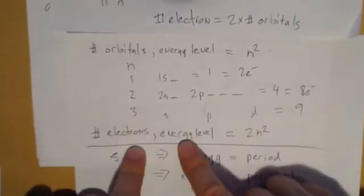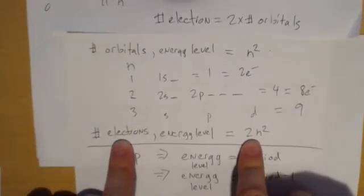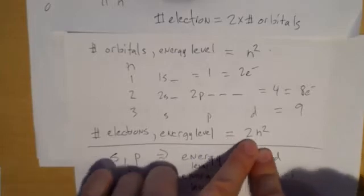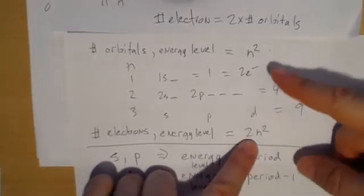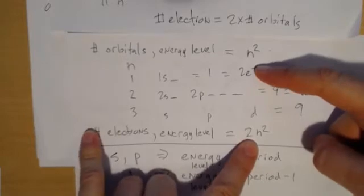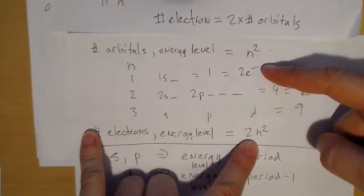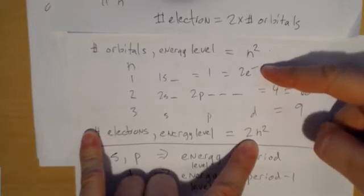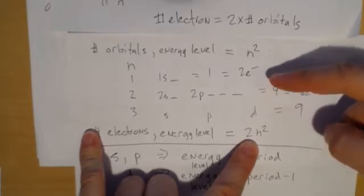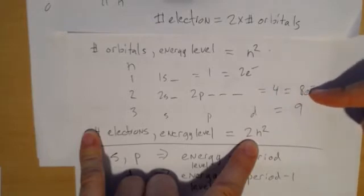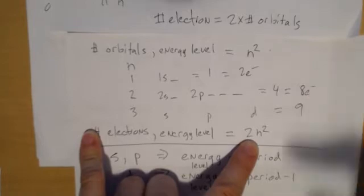The number of electrons in an energy level is equal to two n squared, because I can have two electrons per orbital. So if there's only one orbital, the first energy level can only have two electrons. That's why in the first period there's only hydrogen and helium. In the second energy level where I have four orbitals, I can have eight electrons. And that's why the second period is eight atoms across, ending with neon, starting with lithium.